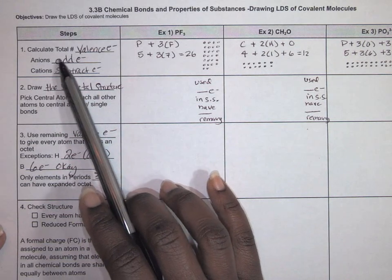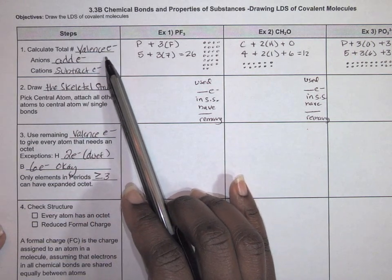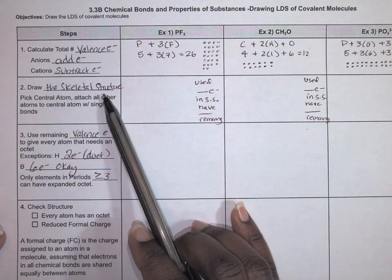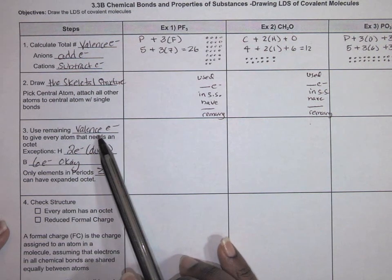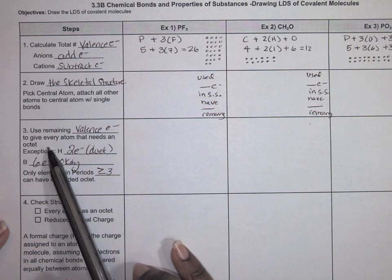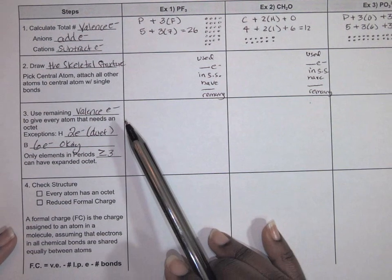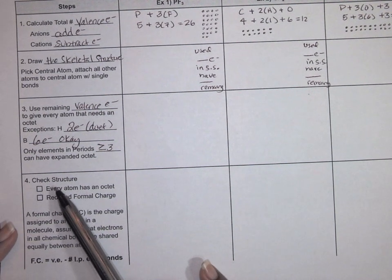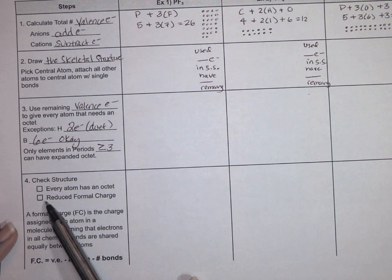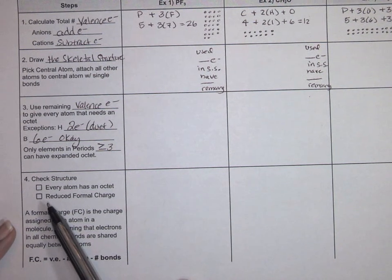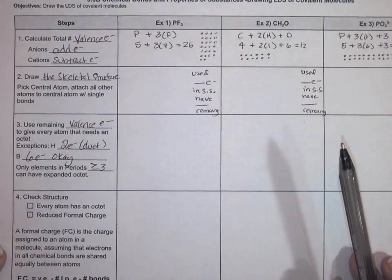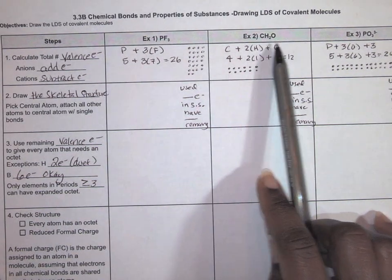The first step is to calculate the total number of valence electrons. The second step is to draw the skeletal structure. The third step is to use the remaining valence electrons to give every atom that needs an octet an octet. And the last step is to check your structure, making sure every atom has an octet, and you want to draw the best structure where formal charges are reduced.